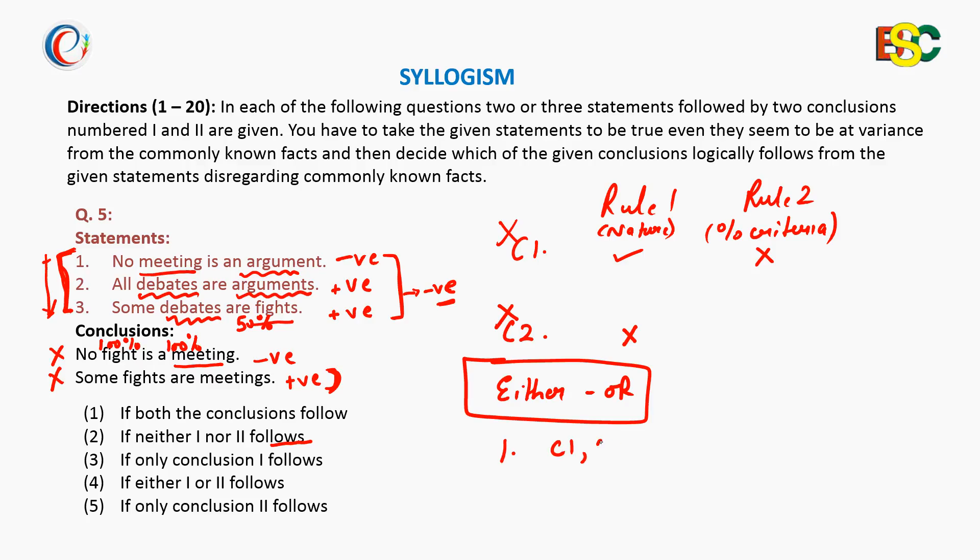One, conclusion 1 and conclusion 2 both are wrong or both do not follow. Then second condition: subject and predicate of conclusion 1 and conclusion 2 must be same. Like here, fight meeting, fight meeting. Both subject and predicate of conclusion 1 and 2 are same. Then third, both conclusions C1 and C2 must be opposite in nature.